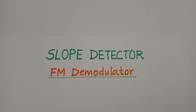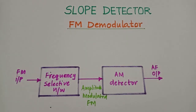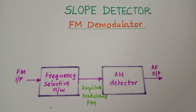In today's lecture we shall discuss the working of a simple slope detector for demodulating FM signals. An FM demodulator is a circuit which should give us back the modulating signal from the FM modulated wave. The output voltage of this circuit should vary linearly with the frequency of the input signal. The slope detector is one of the simplest circuits we can use for demodulating an FM signal.